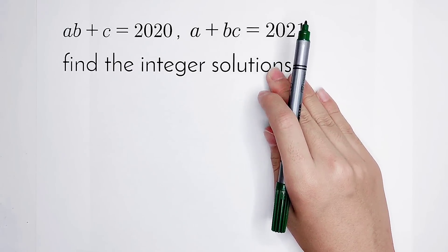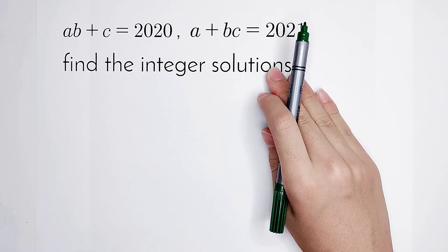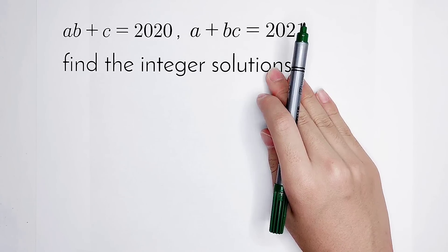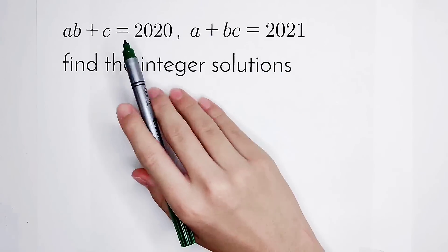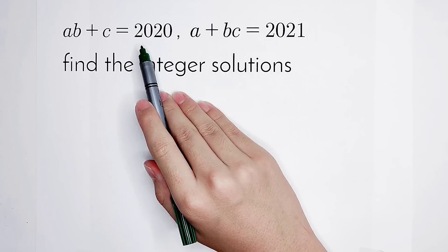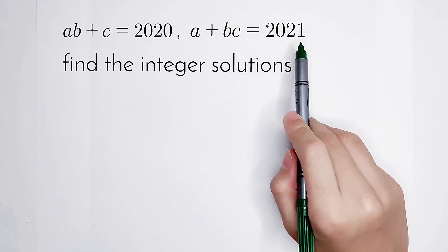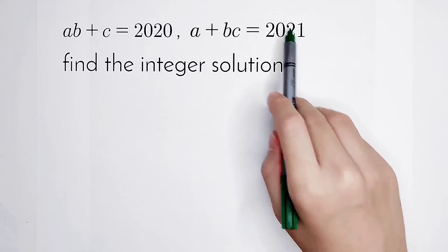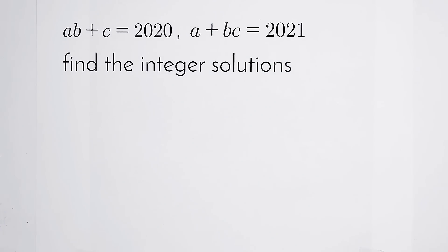Here are only two equations of A and B and C. Maybe you have noticed that, or most of you have noticed that, 2020 and 2021, the right-hand side of these equations, these two numbers are quite close. So this is the main point for us to deal with this question.